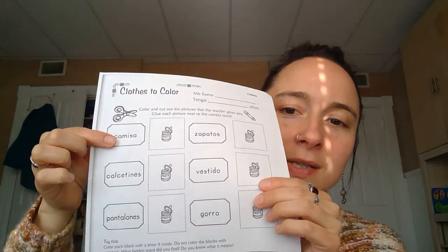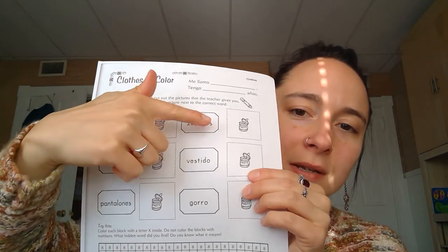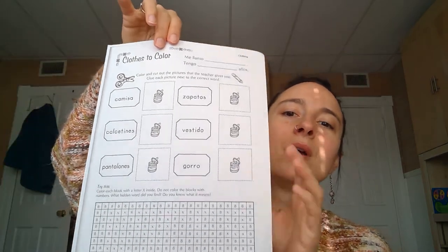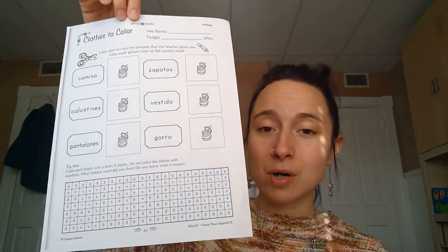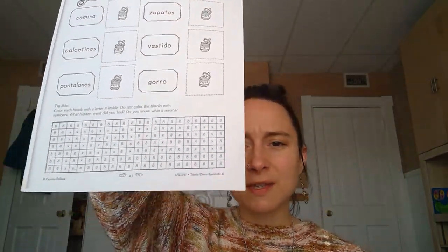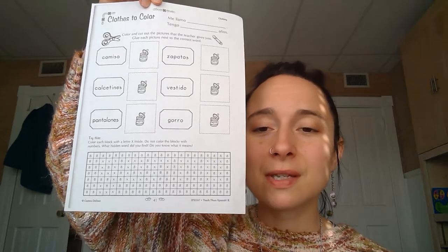And once you do all of the words—camisa, calcetines, pantalones, zapatos, vestido, gorro—once you do all of those words and cut out your pictures and glue them, the bottom we've done this in class before with a different activity. This is find the mystery word.